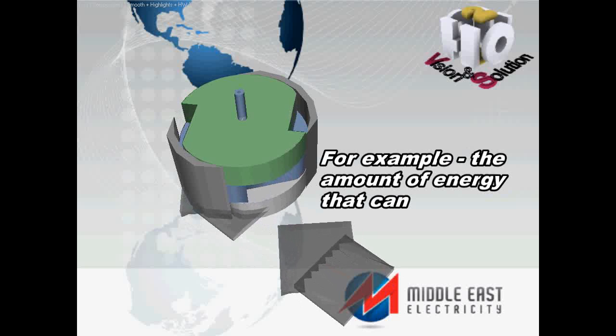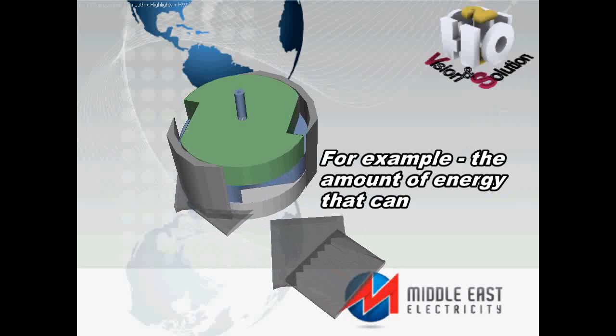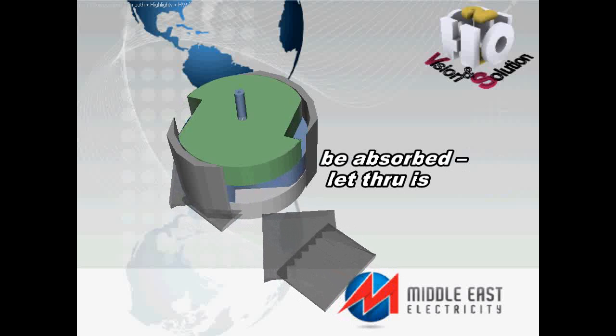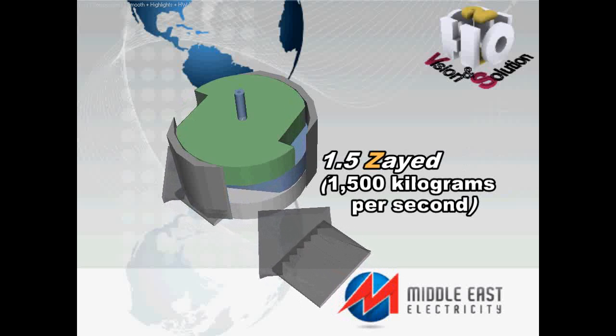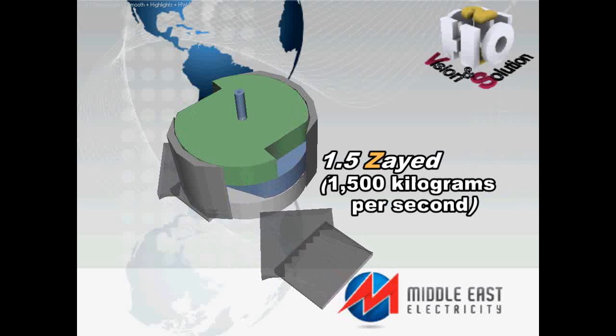For example, the amount of energy that can be absorbed and let through is 1.5 Z, that is 1,500 kilograms per second.